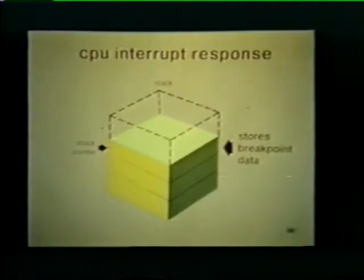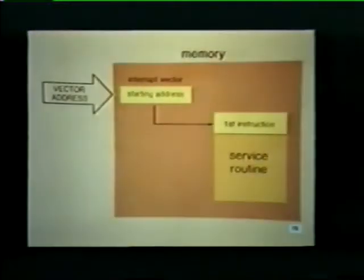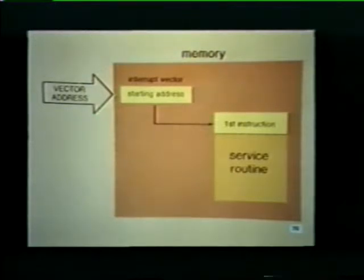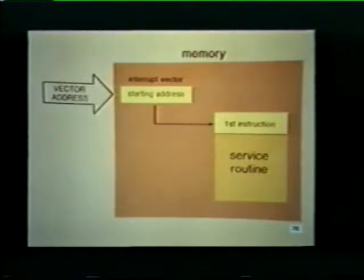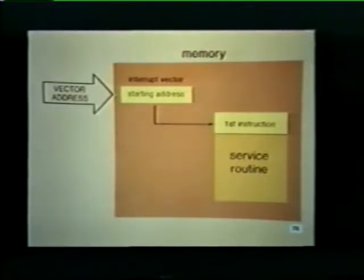Now that the CPU has stored essential breakpoint data, it is ready to service the tape unit's interrupt. As we saw earlier, when the tape unit issued its interrupt, it also supplied the address of an interrupt vector. The interrupt vector contains the starting address of a specific service routine. The CPU then retrieves and executes this routine. In this example, the service routine allows the CPU to analyze the error condition in the tape unit so that corrective action can be taken.